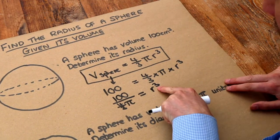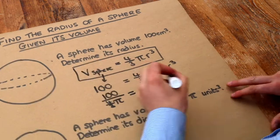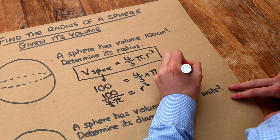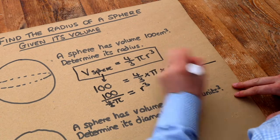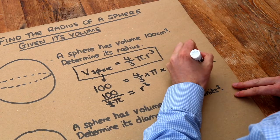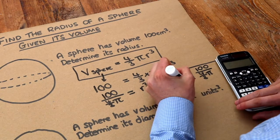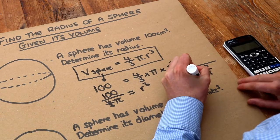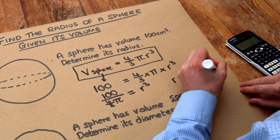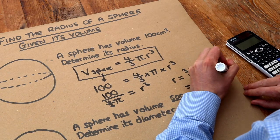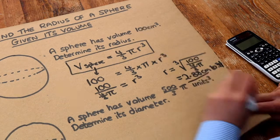And then to get rid of that cubed we do the opposite which is cube rooting. So r is going to be the cube root of 100 over four thirds pi. And if you put that into your calculator you get 2.88 centimeters to three significant figures. That's the final answer.